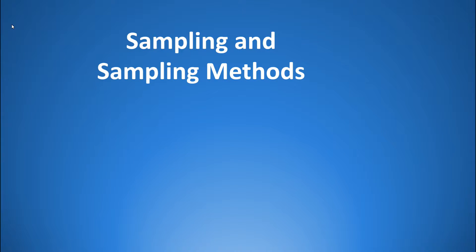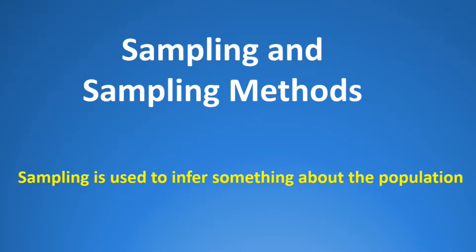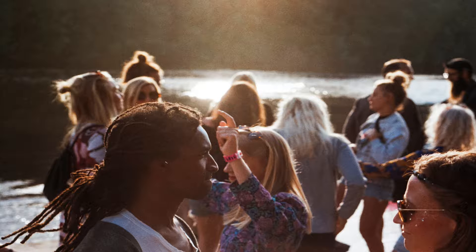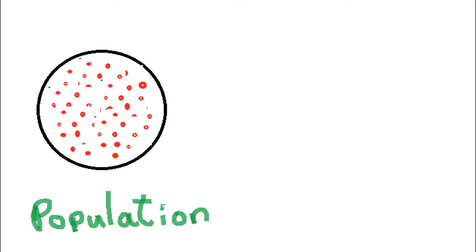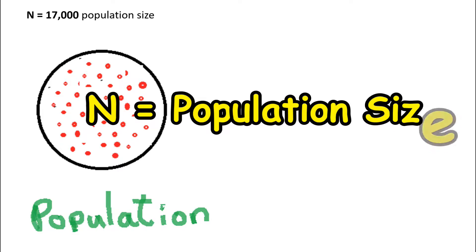Introduction to sampling and sampling methods. Statistics relies on sampling to infer something about the population. Let's say we have a population we would like to know something about — say 17,000 undergraduate students. We use the upper case N, big N, to represent the population size of 17,000.